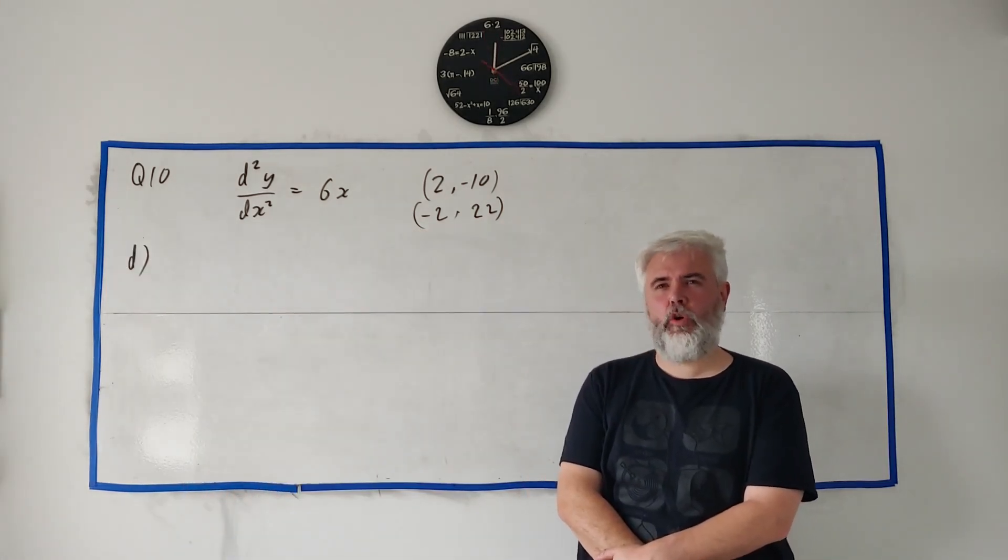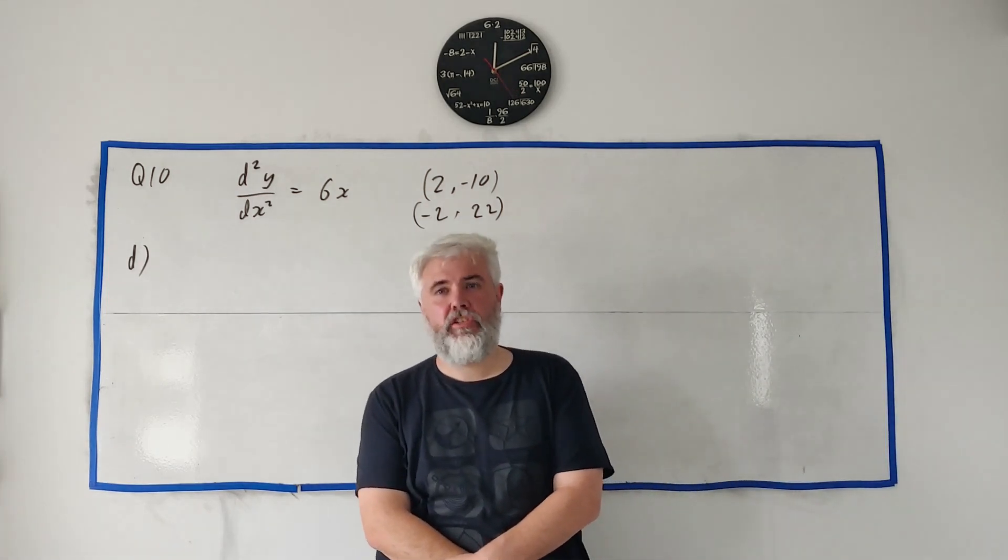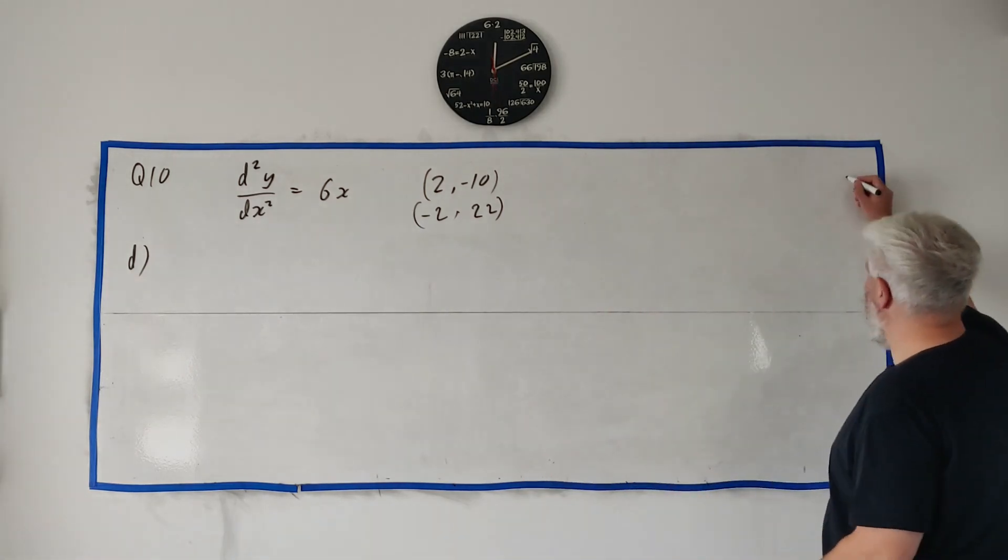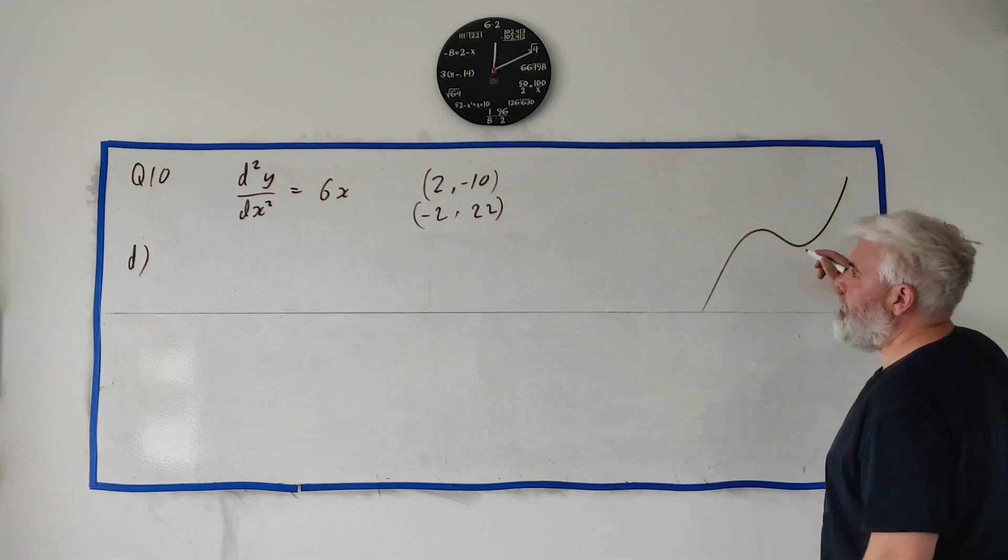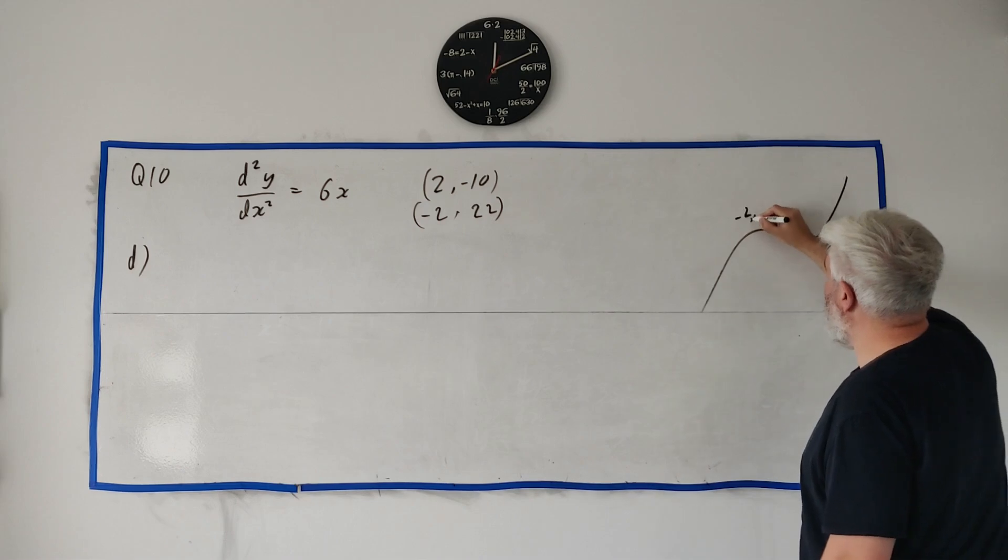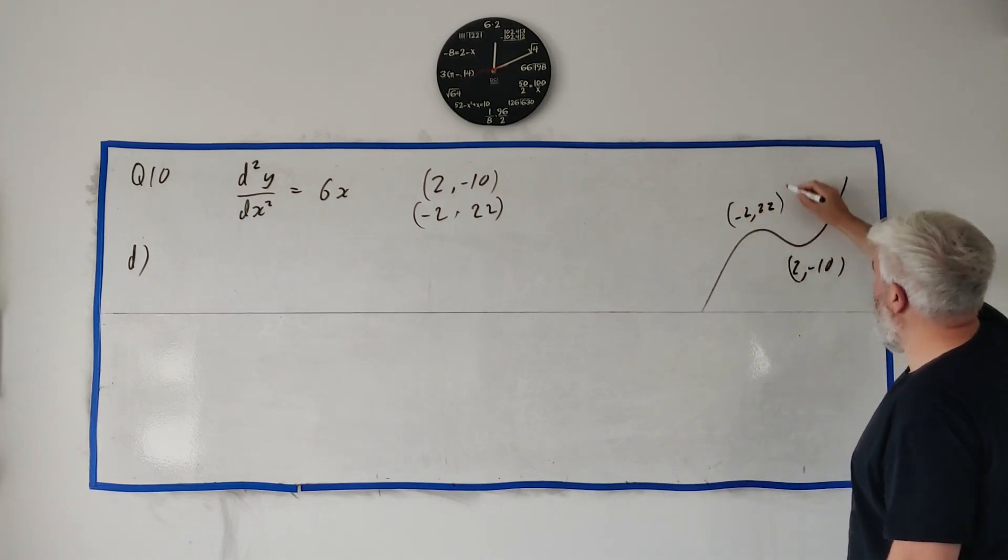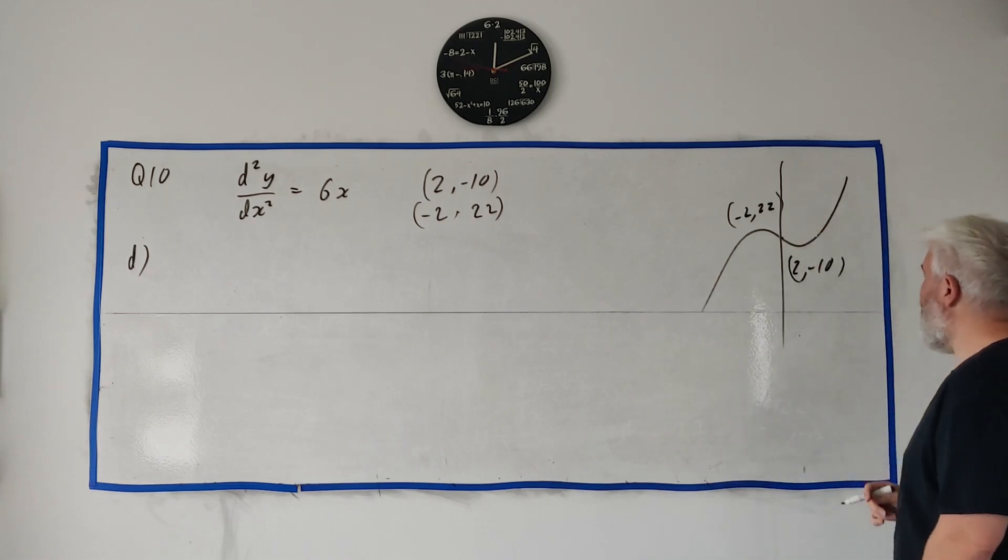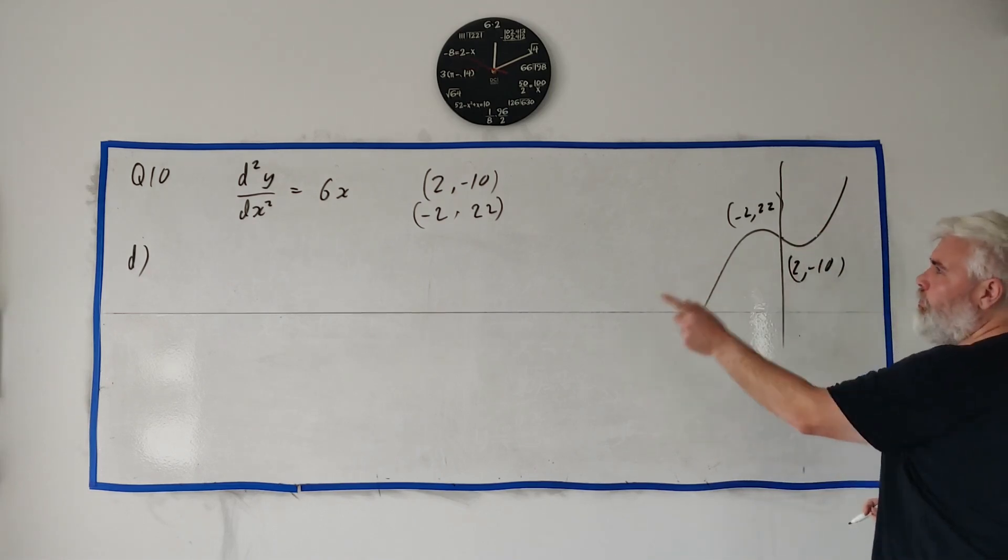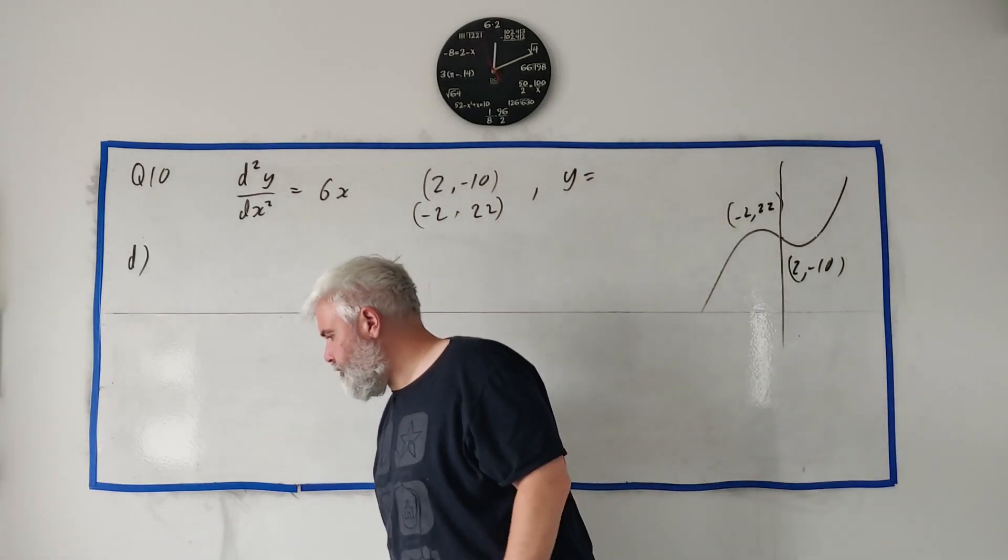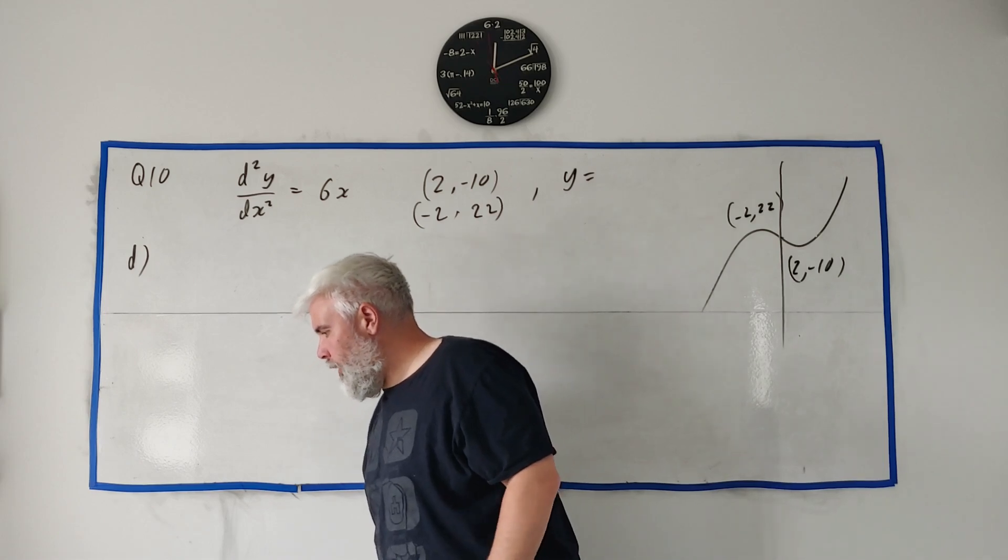That's what they're looking for there. But honestly, this does answer it, but you would have to write a bit of English to explain what you were talking about here. Okay, let me clean this off and we'll do D. Okay, in part D, they ask us to find the equation of the tangent to the curve at the point where the curve crosses the y-axis.